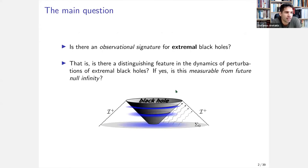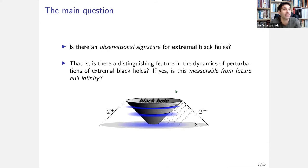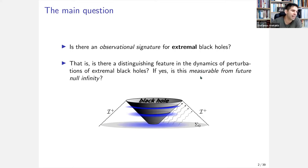The main question is: what do I mean by an observational signature for extremal black holes? We would like to know if there is a distinguishing feature in the dynamics of extremal black holes that differentiates them from non-extremal black holes — whether extremal black holes have different behavior and, more specifically, if that different behavior can be observed from regions outside the black hole, and if possible from null infinity.